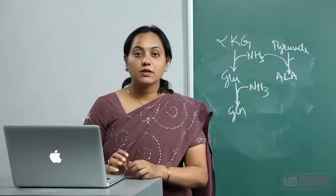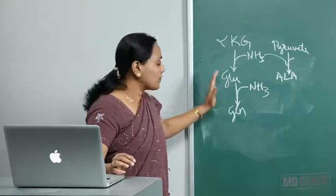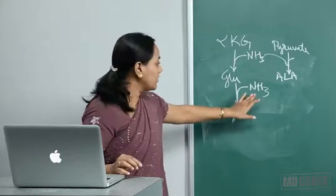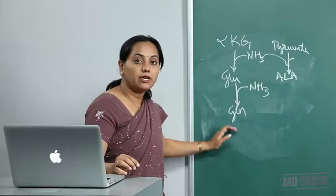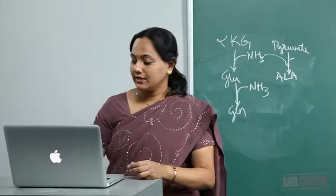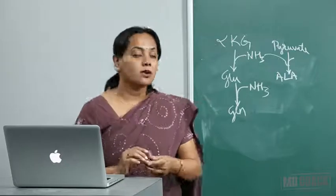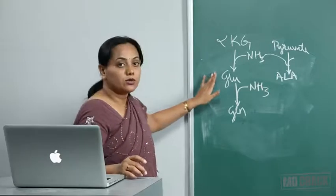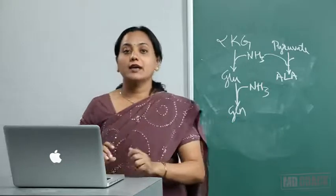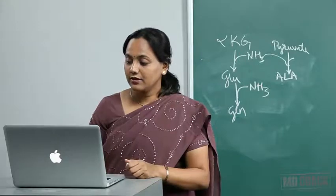In most tissues, the reaction by which glutamine is formed from glutamate — incorporating ammonia — is catalyzed by the enzyme glutamine synthetase. Glutamine synthetase requires energy from ATP. So glutamate to glutamine requires energy, and the enzyme is glutamine synthetase.